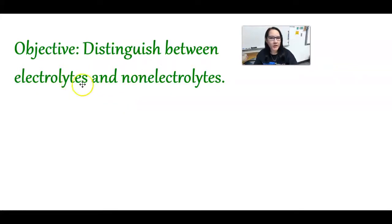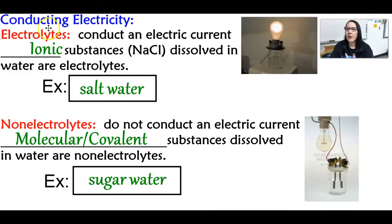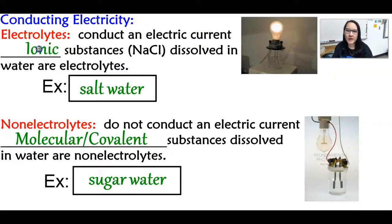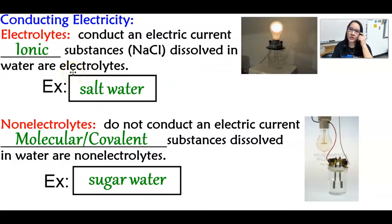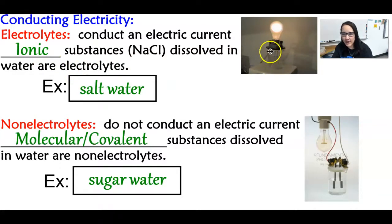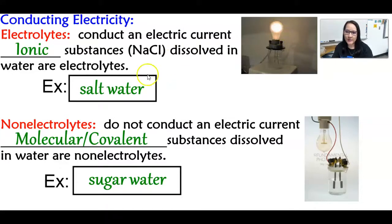Now let's distinguish between electrolytes and non-electrolytes. If you have an electrolyte, it is able to conduct an electric current. For example, ionic substances like sodium chloride — if you dissolve them in water, they'll conduct electricity, and this is known as an electrolyte. You'll notice this is salt water completing the circuit and lighting up the light bulb, which makes it an electrolyte. So salt water is an example of an electrolyte.